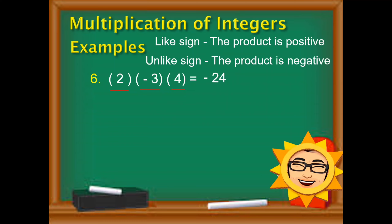But let us be guided with this rule para mas madali. Kasi usually nakakalito yung magiging sign sa product kapag ang given integers ay 3 or more. So magkaroon tayo ng paraan para mas madali natin syang matandaan. Familiar naman tayo sa odd numbers — like 1, 3, 5, 7. Kapag ang bilang ng negative integers sa given ay odd number, ang magiging sagot ay negative. Like the sixth example — isa lang ang negative, and 1 is an odd number, kaya negative yung naging final answer. Sometimes ang negative integers sa given ay even number — like 2, 4, 6, 8. Kapag naman even number ang bilang ng negative integers sa given, the sign will be positive.